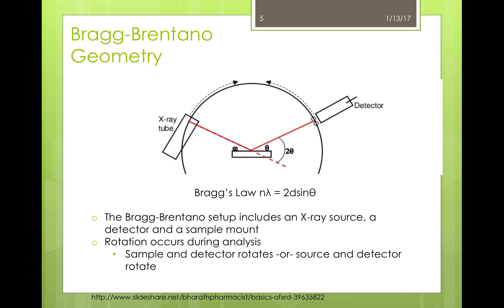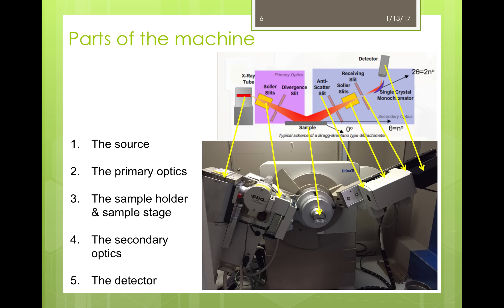Taking a closer look, here are some more parts of the machine that you'll need to know. One is the X-ray tube, or the source. Just to the right of that are the Soller slits and divergent slits, which make up the primary optics. In the very center is the sample holder and sample stage. Then to the right of that, highlighted in blue at the top, is all of the secondary optics. And then lastly, to the farthest right, is the detector.